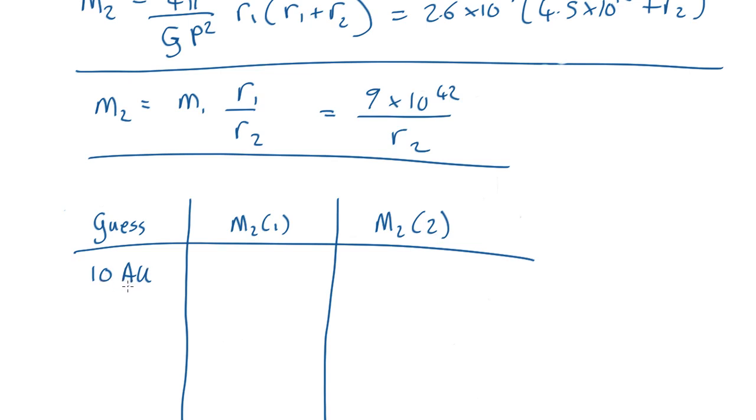Stick it into the two equations and what we get is here a value of 9.3 by 10 to the 32 kilograms and here 6 by 10 to the 30 kilograms. Now these two values are quite different, they're more than a hundred times different from each other, so clearly 10 astronomical units was not a good bet.